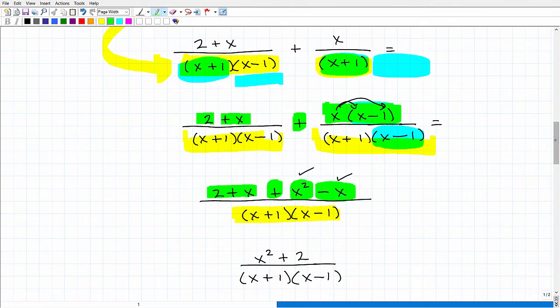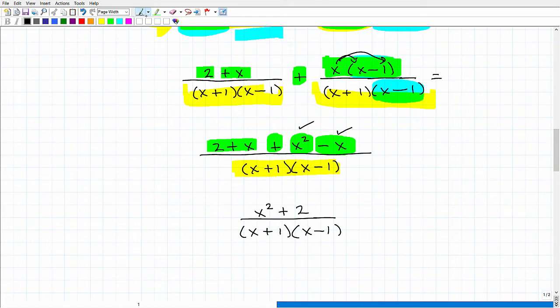All right, so at this point, I can go ahead and just simplify the remaining terms in the numerator. So I have 2 + x. I have a positive x, and I have a -x. They're going to cross cancel.